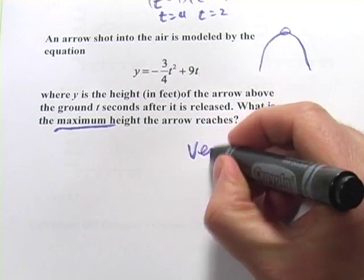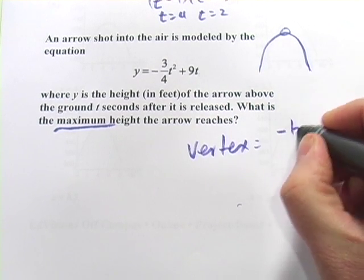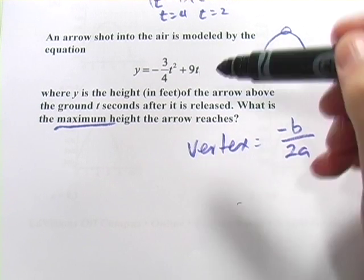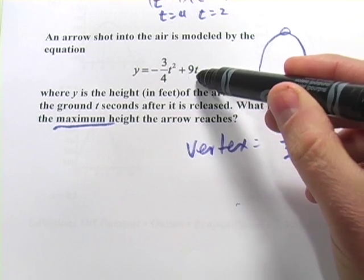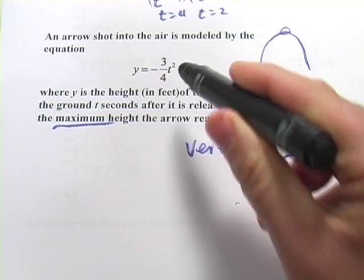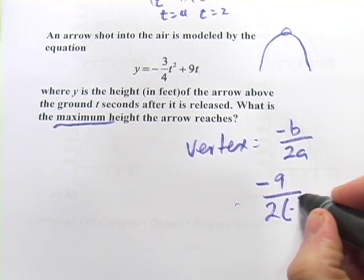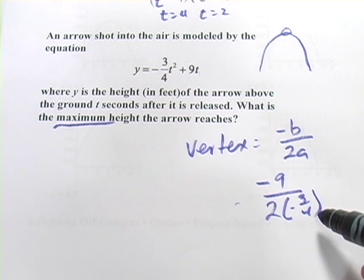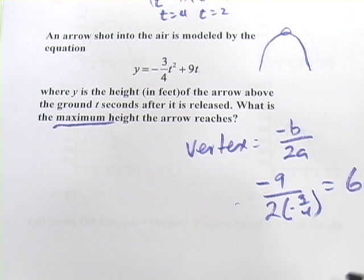So the formula for the vertex or the x-coordinate of the vertex is negative b over 2a. And these are the b's and the a's just like we use for the quadratic formula. So b is the coefficient of the x term or the t term in this case. And a is the coefficient of the squared term. So in this case, it would be negative 9 over 2 times a negative 3 fourths. And let's see, 2 times, well, if you figure this out, you could multiply that by 4. This actually comes out to positive 6.